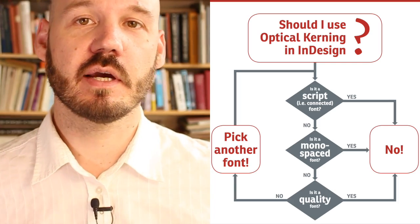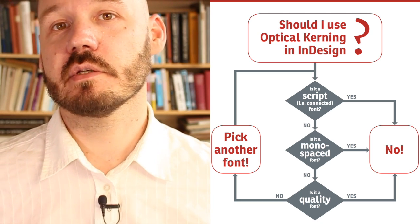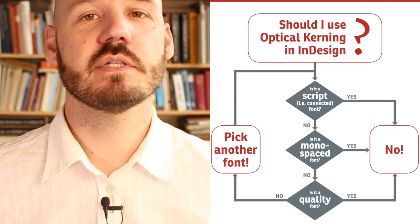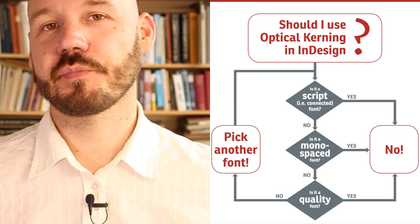Hi and welcome to another episode on the Typography Guru YouTube channel. My name is Ralf Herrmann. Last year I posted a flowchart about optical kerning in InDesign on several social media sites. You might pause the video if you want to take a closer look. But the diagram basically just says you shouldn't use InDesign's option for optical kerning unless you have a bad font, and then you should rather change the font. This diagram was first and foremost meant to be funny, but that doesn't mean there weren't some valid and interesting points in there. In this video we will now take a closer and more serious look at what optical and metric kerning are and how they are supposed to be used to get the best results.